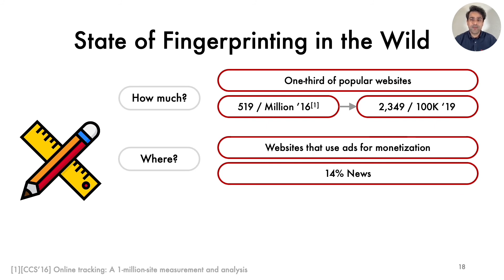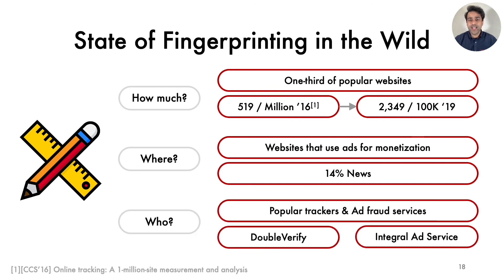We also analyzed the websites where fingerprinting scripts are deployed, and as expected, they tend to be websites that rely on advertising for monetization, confirming that fingerprinting is used in practice for tracking. Specifically, 14% of all websites deploying fingerprinting are news websites. We also analyzed the services that serve fingerprinting and find that the most prevalent vendors also provide cross-site tracking or anti-ad fraud services. The two top vendors are DoubleVerify and Integral Ad Science, which are classified as trackers by the Disconnect Tracking Protection list.